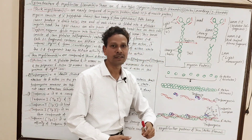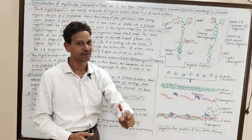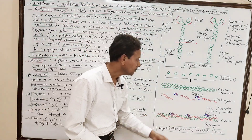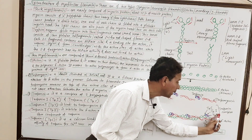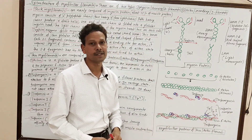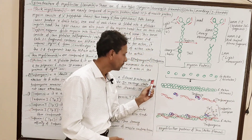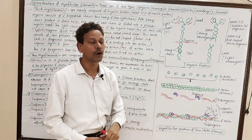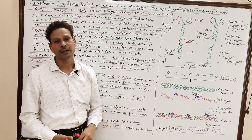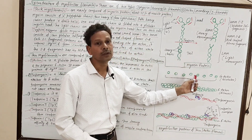Troponin I — I for inhibition — means this Troponin I polypeptide chain inhibits the interaction of actin and myosin proteins in normal conditions. And this third polypeptide chain, Troponin T, binds the tropomyosin at the time of muscle contraction, so that these tropomyosin enter into the active grooves of F-actin. This is all about the ultrastructure of myofibrillar proteins of thin and thick myofilaments.